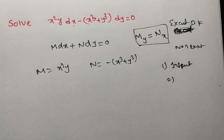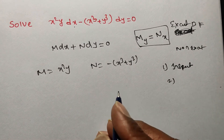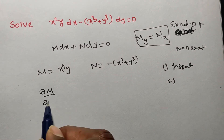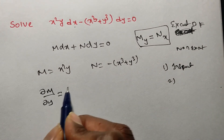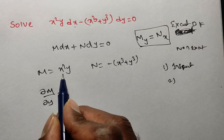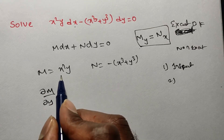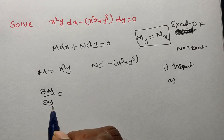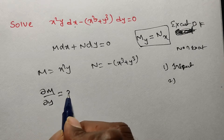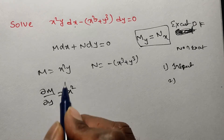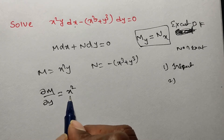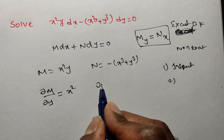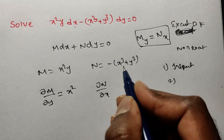First, I am verifying whether it is exact or not. Find ∂M/∂y: since M = x²y, x is treated as a constant when differentiating partially with respect to y, so x² is constant and the derivative of y is 1. Therefore ∂M/∂y = x².